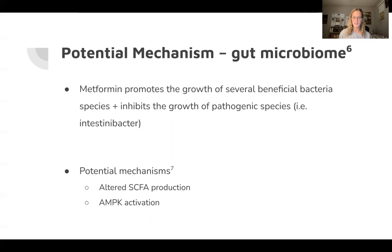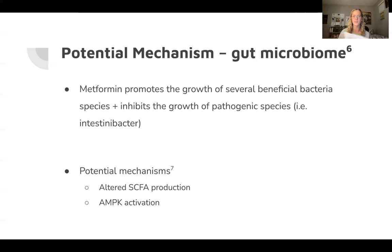The potential mechanisms have to do with AMP kinase activation as well as short-chain fatty acid production. A Colombian study found that metformin consumption resulted in increased levels of beneficial bacteria species including B. bifidum, and decreased pathogenic species. These beneficial species upregulated through the consumption of metformin have been linked to short-chain fatty acid production, which could explain the decreased blood glucose levels.